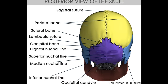The occipital bone consists of superior and inferior angles, as well as superior and inferior borders. The superlateral borders, or parietal margins, join the posterior border of the parietal bone at the lambdoid suture, while the inferolateral borders join with the mastoid section of the temporal bone on either side at the occipital mastoid suture. The superior angle articulates with the occipital angles of the parietal bones in adults, whereas the inferior angle joins with the body of the sphenoid bone. The lateral angle lies where the superlateral and inferolateral borders meet.